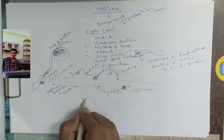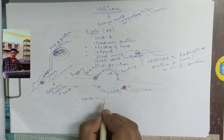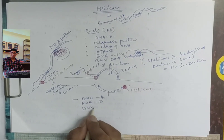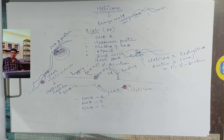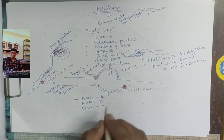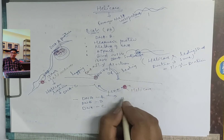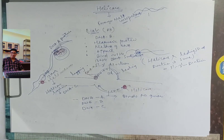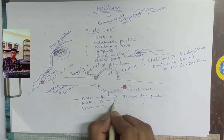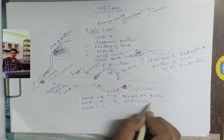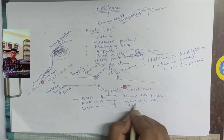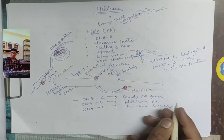So to summarize the prokaryotic proteins: first is DNA A, second is DNA B, and third is DNA C. DNA A binds to the 9-mer sequence. DNA B is helicase in prokaryotes. DNA C is the helicase loader.